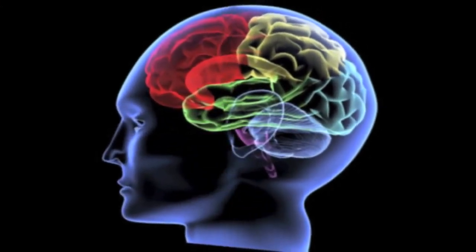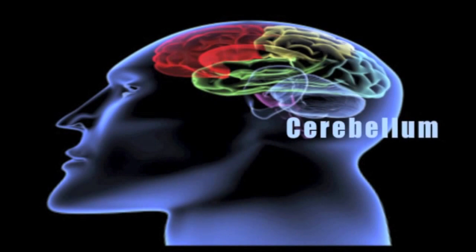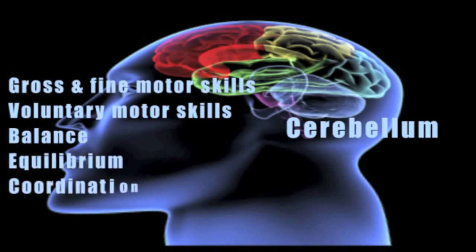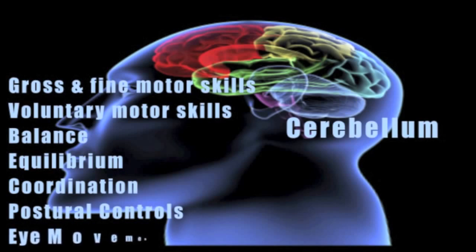The cerebellum is located at the back and base of the brain at the top of the spinal column. It controls gross and fine motor coordination, and all of our voluntary motor coordination — such as reaching out to grab a jar off a shelf. It governs our balance and equilibrium: the ability to stand up without falling, ride a skateboard, ride a bicycle, or go for a jog. It also manages our postural control and eye movements — moving our eyes back and forth and up and down — and utilizing our eyes to obtain visual information for the brain to process.